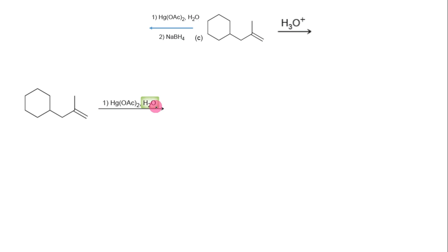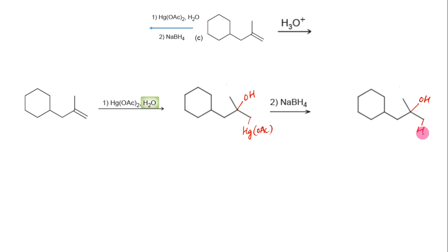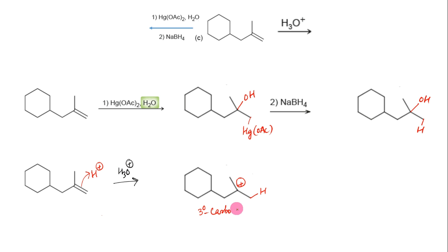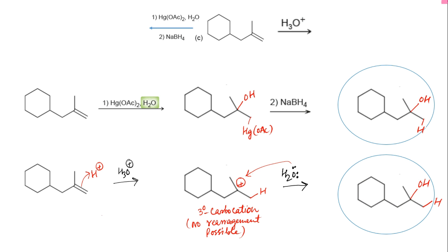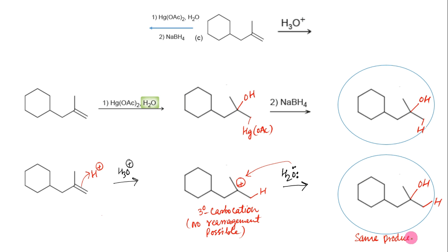Consider this last example. The oxymercuration gives the organomercurial alcohol, which is treated with NaBH4 to form a tertiary alcohol. The acid-catalyzed hydration forms a tertiary carbocation upon electrophilic addition of a proton in accordance with Markovnikov's rule. This carbocation has no option for any rearrangements to form a more stable carbocation. Therefore it will be captured by water to form the same tertiary alcohol product as obtained in oxymercuration-demercuration. Therefore, if the substrate is not prone to carbocation rearrangements, both methods will give the same product.